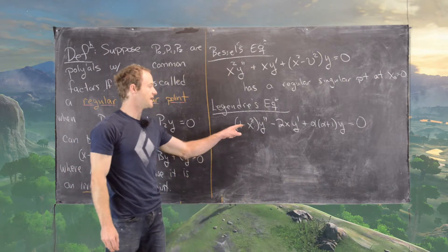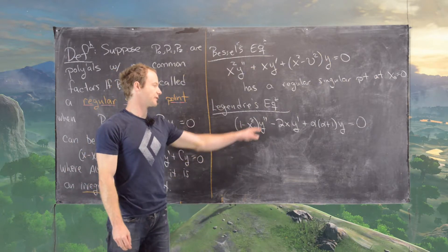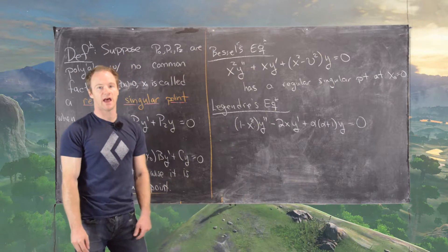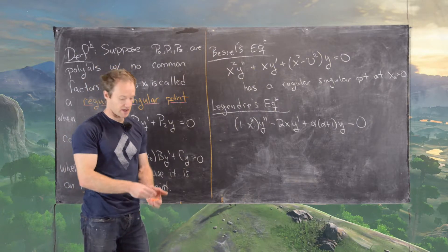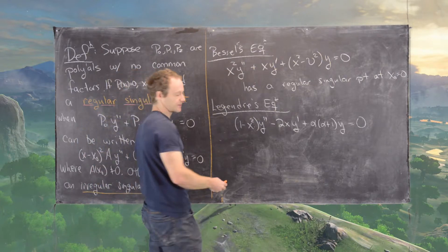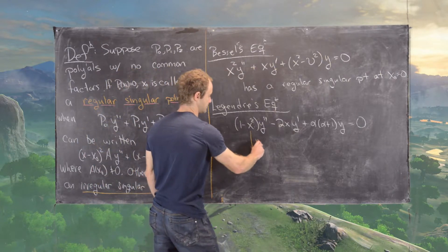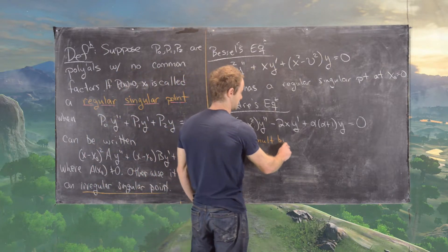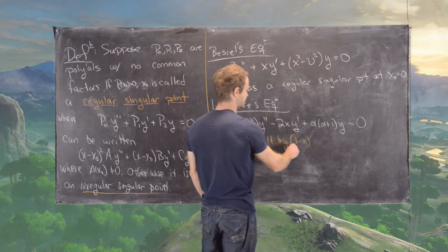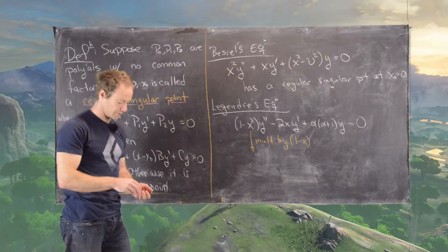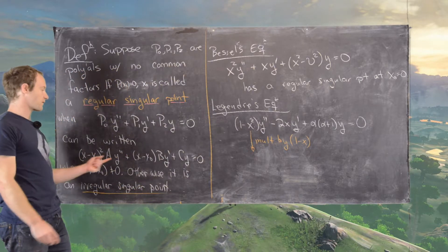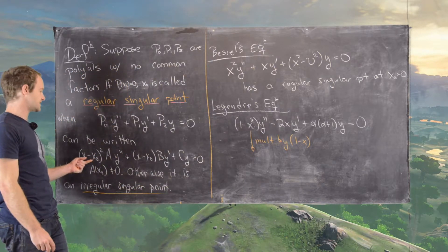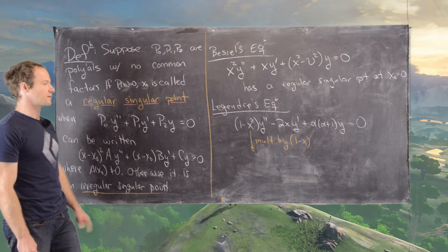Now notice that the coefficient of y double prime has a root at plus and minus 1. So what we'll do is multiply by 1 minus x to give us a double root at x equals 1, because that's what we want to go for.